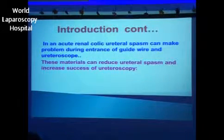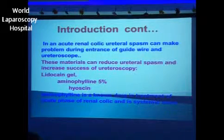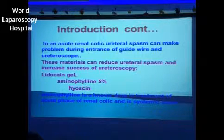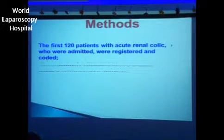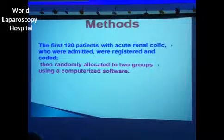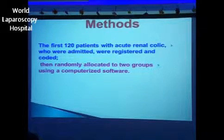Materials that can reduce ureteral spasm and increase success of urethroscopy include lidocaine gel, local aminophylline, systemic aminophylline, and hyoscine. Aminophylline is a non-opioid drug used in treatment of the acute phase of renal colic and is used systemically. For this reason, this double-blind randomized clinical trial was performed after registration by IRCT, the Iranian Registration of Clinical Trials.